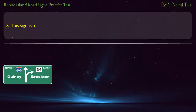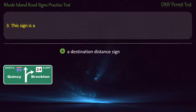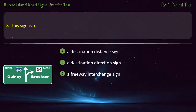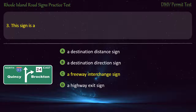Question 3. This sign is: a destination distance sign, a destination direction sign, a freeway interchange sign, a highway exit sign. Answer: A freeway interchange sign.